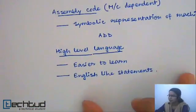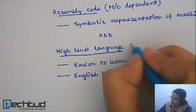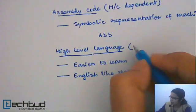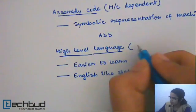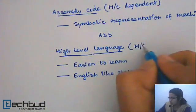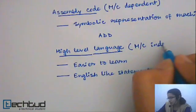But a high-level language program — like one written in C or Java — will run similarly on your machine and also on my machine. So it is machine independent.